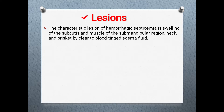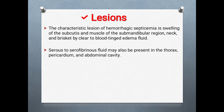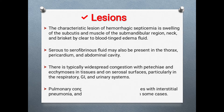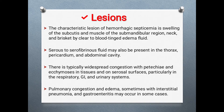Serous to serofibrinous fluid may also be present in the thorax, pericardium, and abdominal cavity. There is typically widespread congestion with petechiae and ecchymosis in tissues and on serosal surfaces, particularly in the respiratory, gastrointestinal, and urinary tracts. Pulmonary congestion and edema, sometimes with interstitial pneumonia and gastroenteritis — inflammation of the stomach and intestine — may occur in some cases.